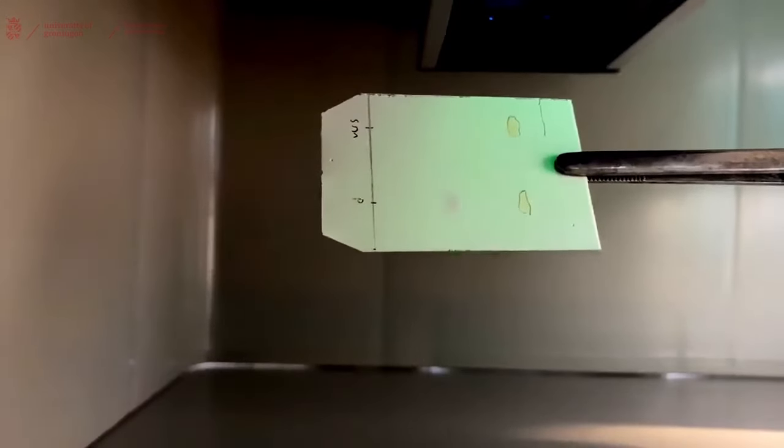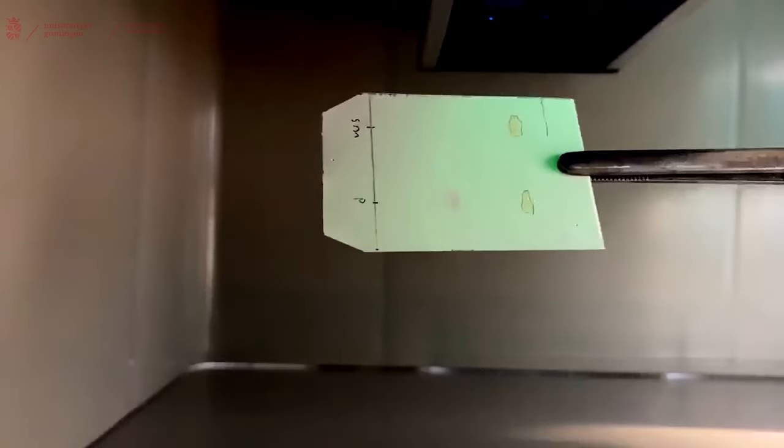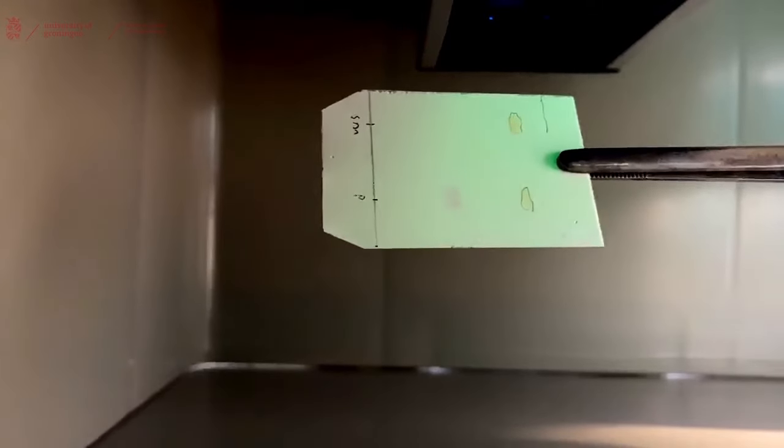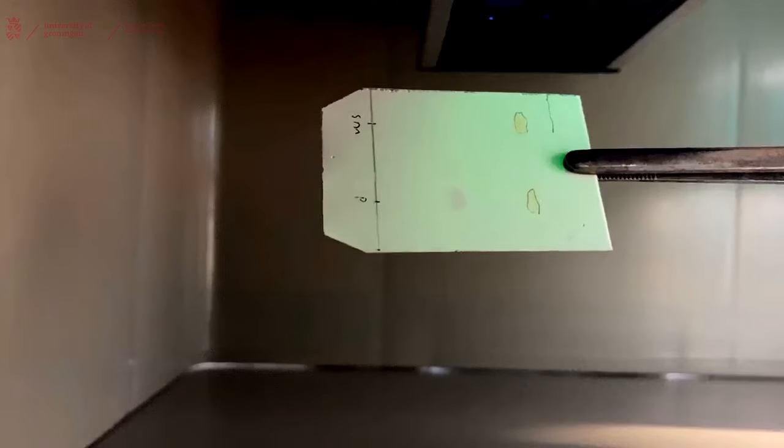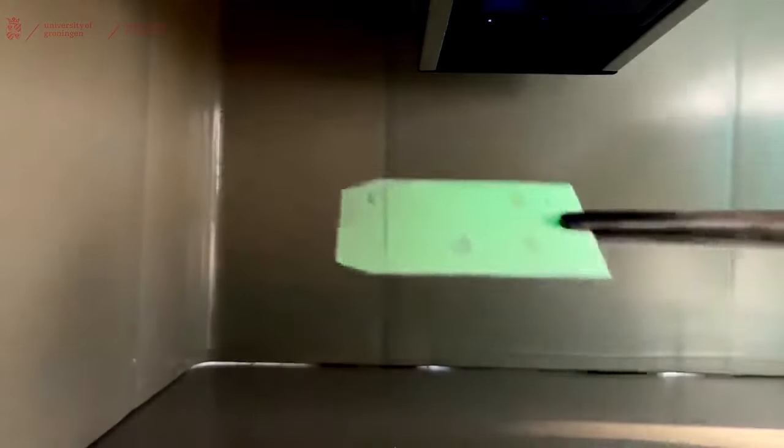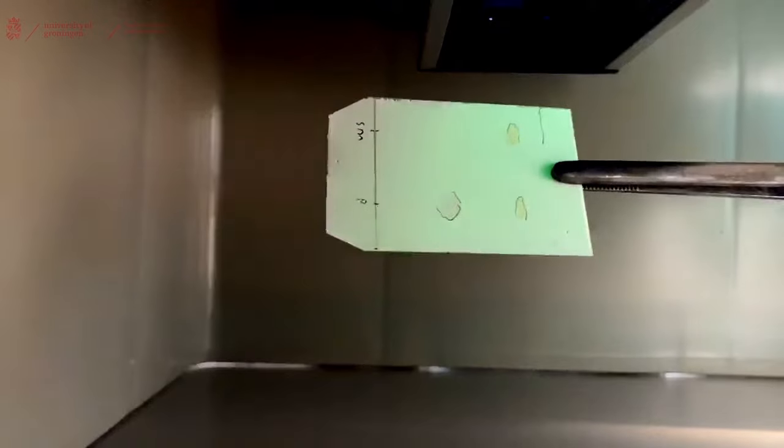If we remove the TLC plate from underneath the UV light we won't be able to see the spot anymore. So we have to make sure that we circle this spot with pencil before removing it from the UV light.